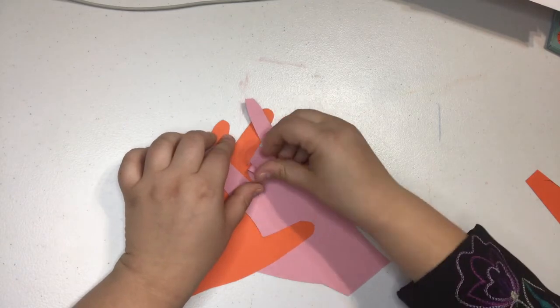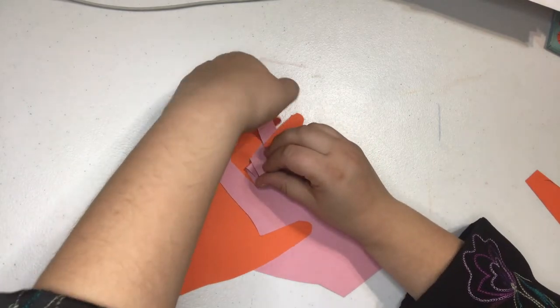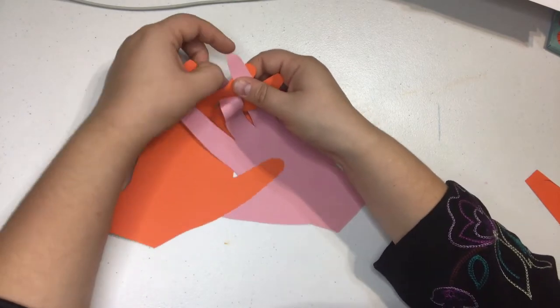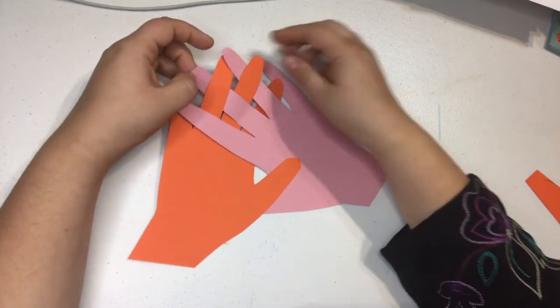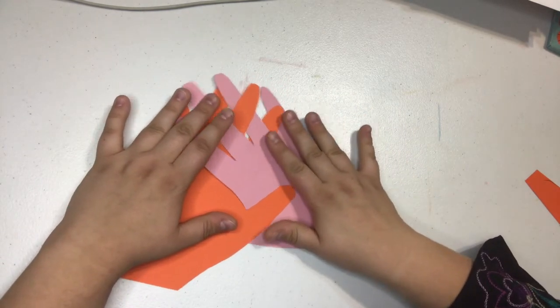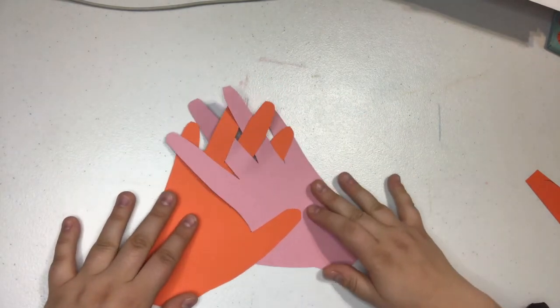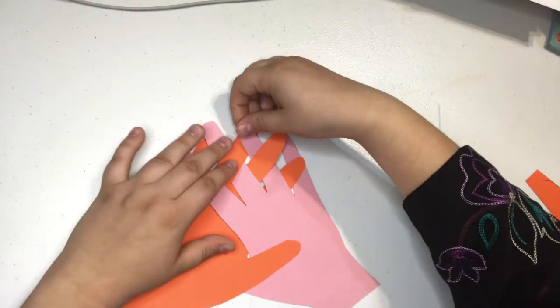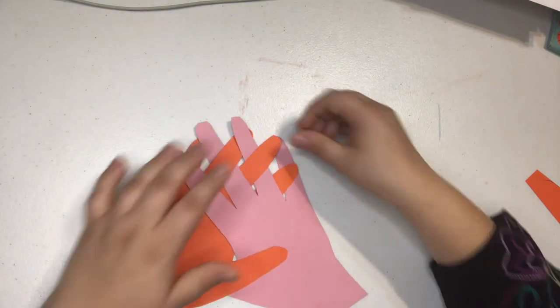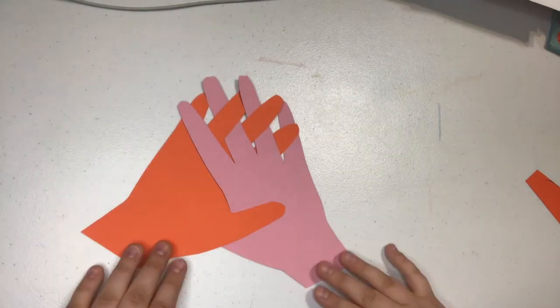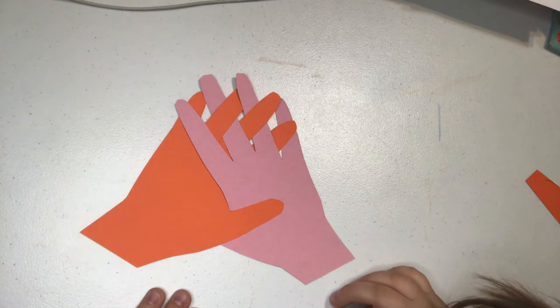Now sometimes this takes a little bit of trial and error to make it work. You might want to ask an adult to help. All right, let's get that moving a little bit. You can see how the fingers are weaving together.